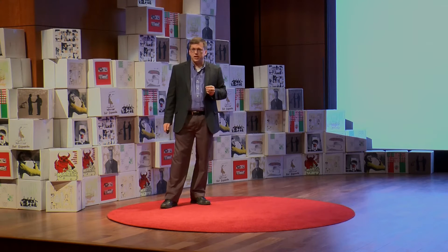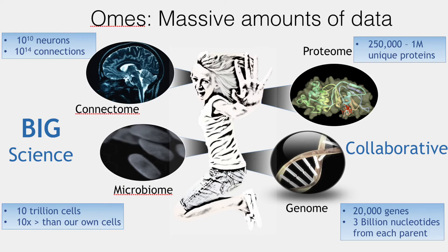For example, the genome consists of 20,000 genes that are encoded by 3 billion nucleotide base pairs that we inherit from each parent. The proteome consists of 250,000 to 1 million unique proteins that are encoded by those genes.